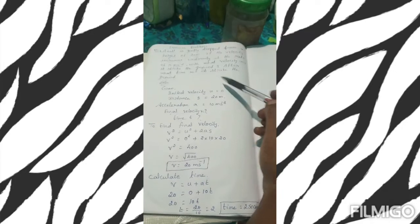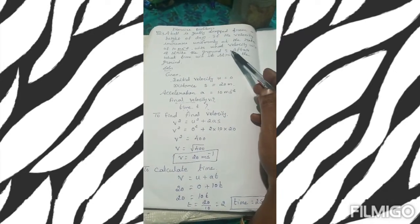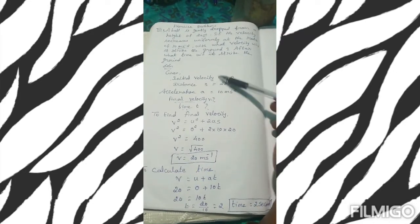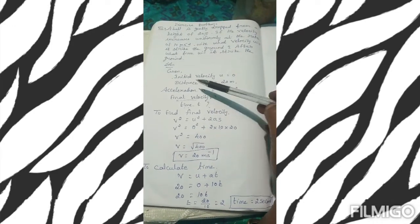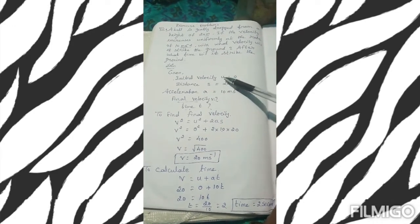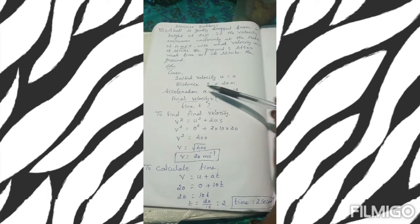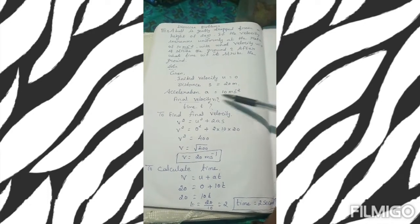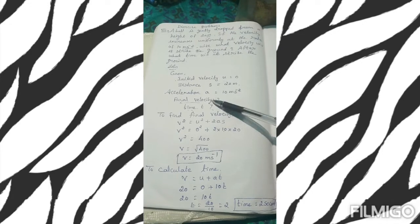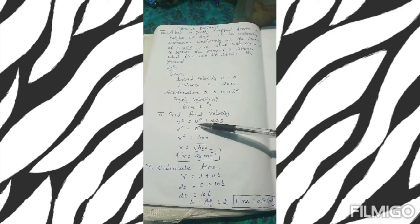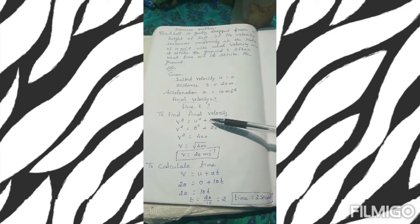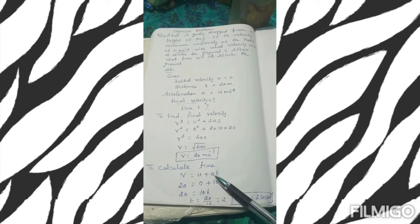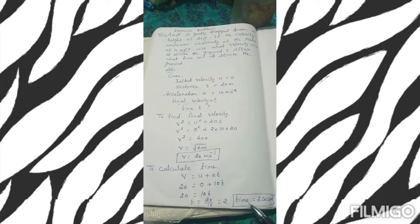To summarize: read the question well and write what is given. Initial velocity U equal to 0 (not given, you take it as 0 for a dropped body). Distance equal to 20 meters, acceleration given. To find final velocity, use the third equation of motion; substitute values to get V. Then use the first equation of motion to get time T.